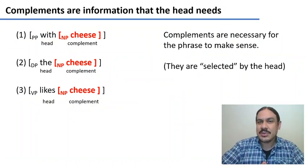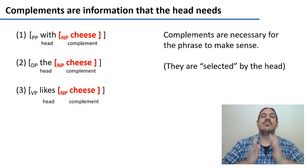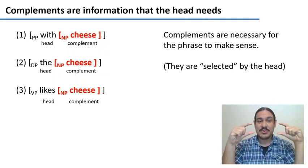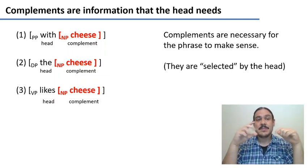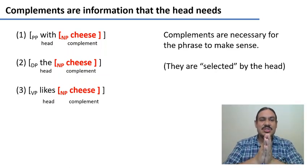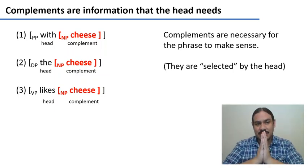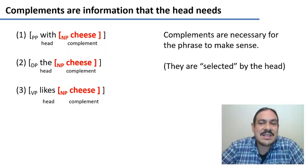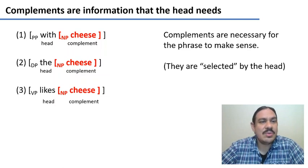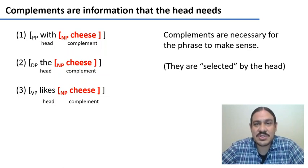Let's review a little bit of what we had last time. We had phrases like prepositional phrases, determiner phrases, and verb phrases. These are called prepositional, determiner, or verb phrases because their head is a preposition, a determiner, or a verb. For example, in the phrase 'with cheese,' that phrase has a preposition 'with,' and so the whole structure has to be a prepositional phrase.